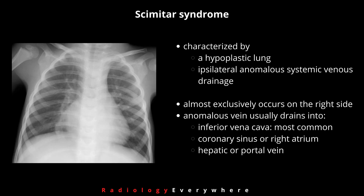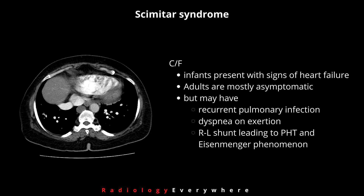Scimitar syndrome is characterized by a hypoplastic lung and ipsilateral anomalous systemic venous drainage. It almost exclusively occurs on the right side. This anomalous vein usually drains into the inferior vena cava, which is the most common type, or into the coronary sinus, right atrium, hepatic, or portal vein.